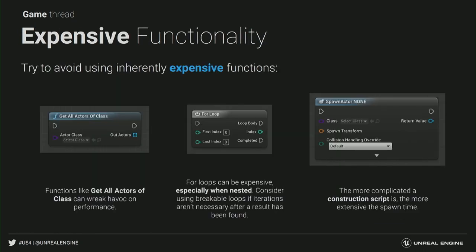Speaking of expensive functionality, try to avoid using functionality that's inherently expensive, and if you really need it, use it with care. A great example is `GetAllActorsOfClass`. When you're starting with Unreal, there's a tendency to abuse it. If you really need to use it in event-based logic, do that when the game starts, or make it event-based so it only updates when it actually needs to access the data — just cache everything in an array variable. Also, if you need to use for loops, especially when they're nested, make sure you're using breakable loops so you don't need to run all iterations when you've already found what you're looking for.